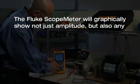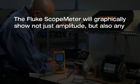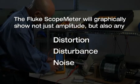The Fluke scope meter will graphically show not just amplitude, but also any distortion, disturbance, or noise that may be affecting the waveform.